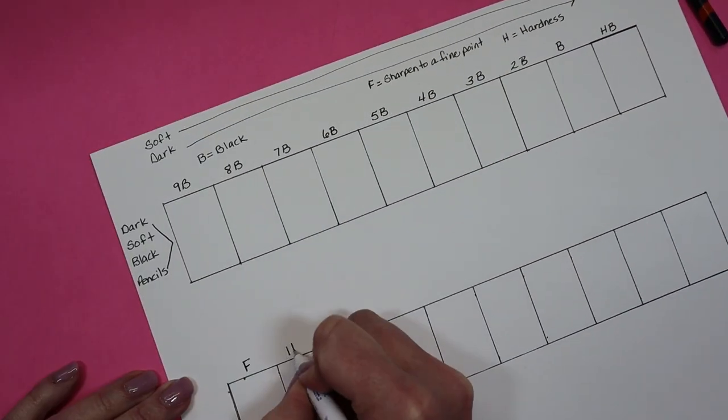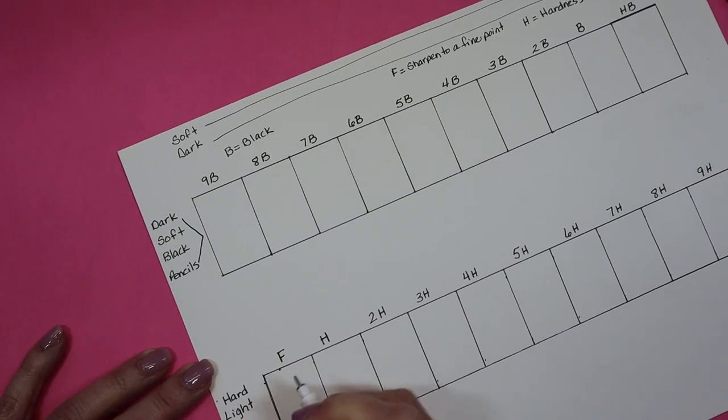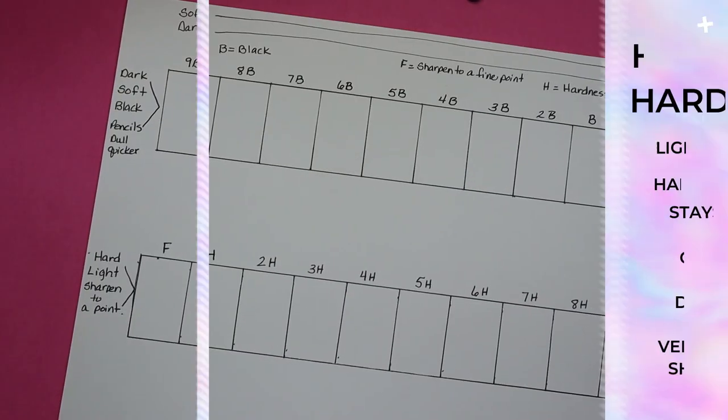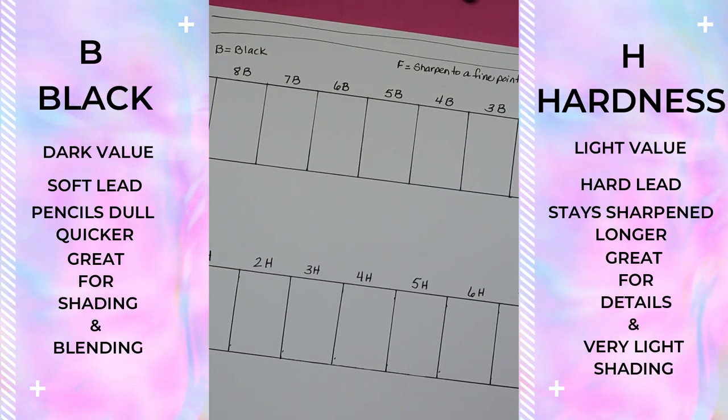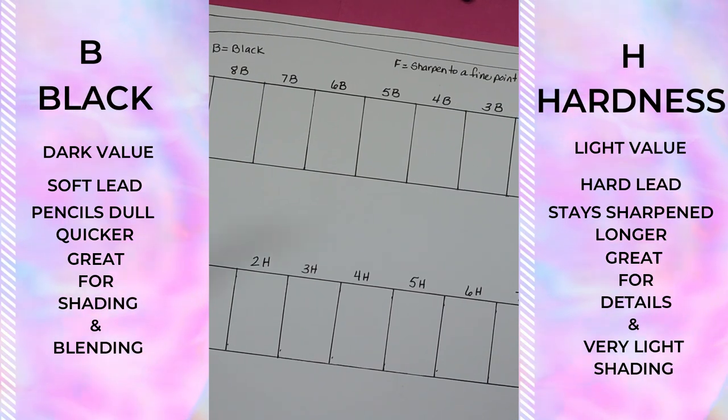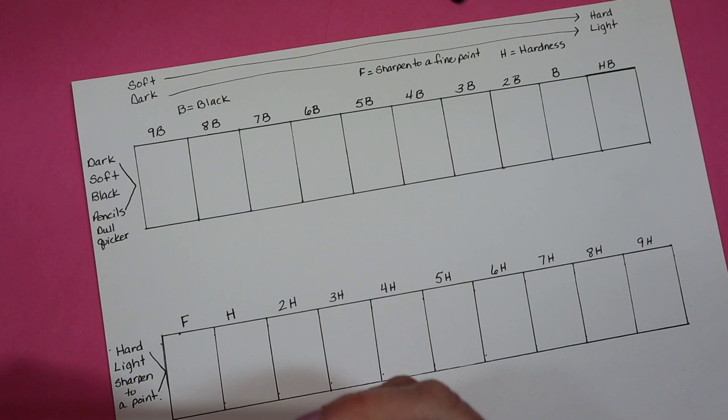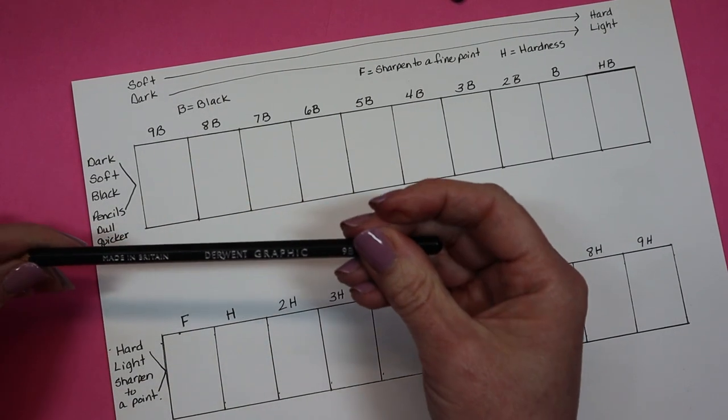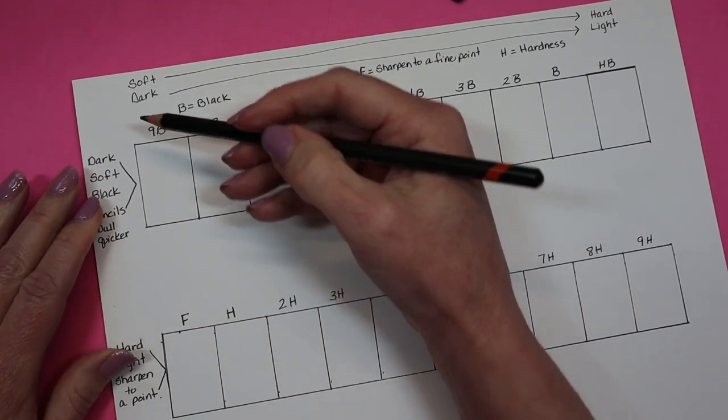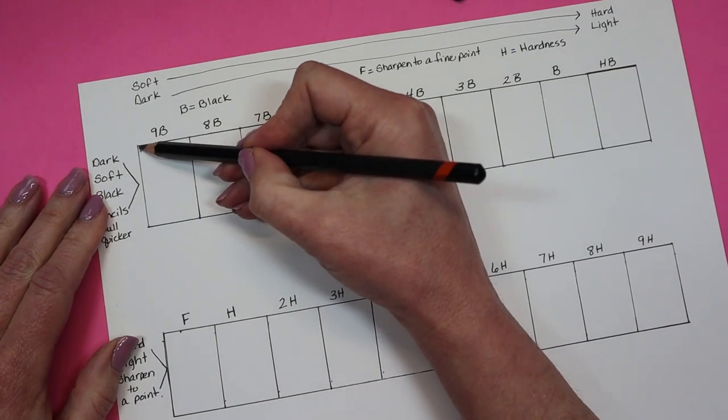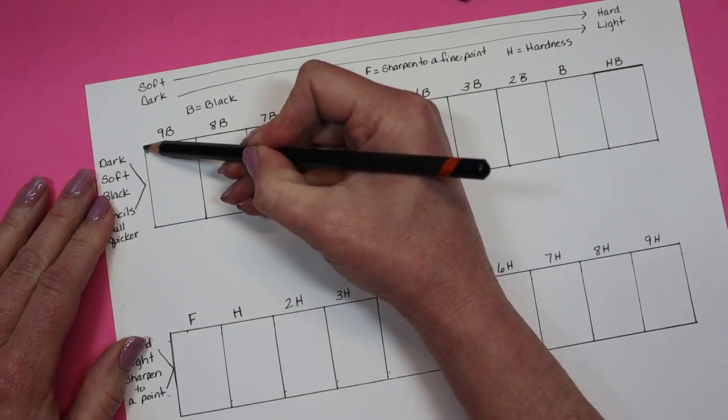Here I am labeling each box. We'll kind of speed through this. A few reminders to the side: B (black) is dark value, H (hardness) is light value. Your darker value pencils, your B pencils, are going to need sharpening much more often. Your hard pencils tend to keep a fine point.